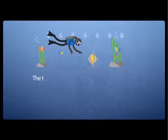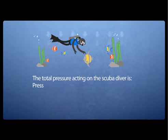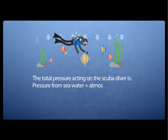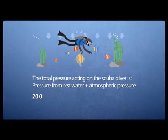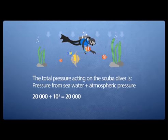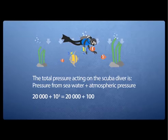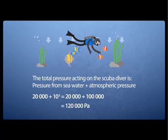But if that's your final answer, it's wrong — you must be careful in your exam. They've given you the value of atmospheric pressure, so you must add it in. The total pressure acting on the scuba diver is the pressure from seawater plus atmospheric pressure. Therefore, 20,000 pascals plus 10 to the power of 5 pascals gives you 120,000 pascals.